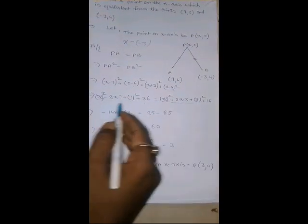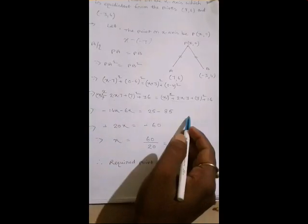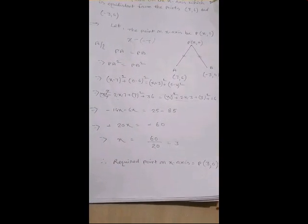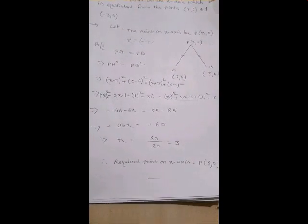x square x square will cancel out. This x, x one side. Number, number, another side. We will get the required result. Thank you.